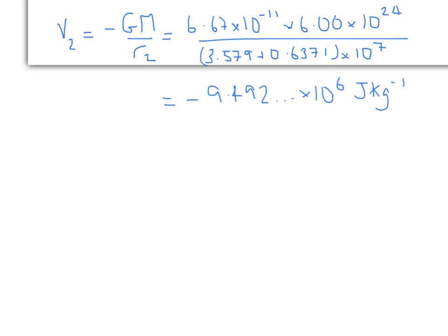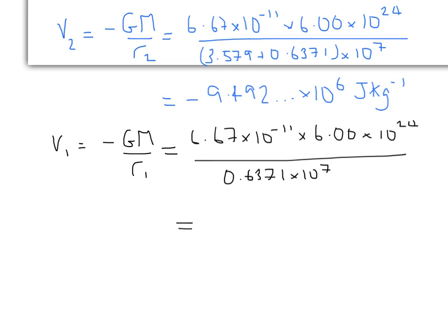Now, if we do the same thing for V1, again, going through exactly the same stages, let's put some numbers in, like this. So this time we've only got the Earth's radius in there, because that was the starting point. Then again, if we do the numbers, we get minus 6.10 times 10 to the 7 joules per kilogram. Which, you can see here, is a much bigger negative number than this original one, which is what you'd expect, because it's closer to the centre of mass.